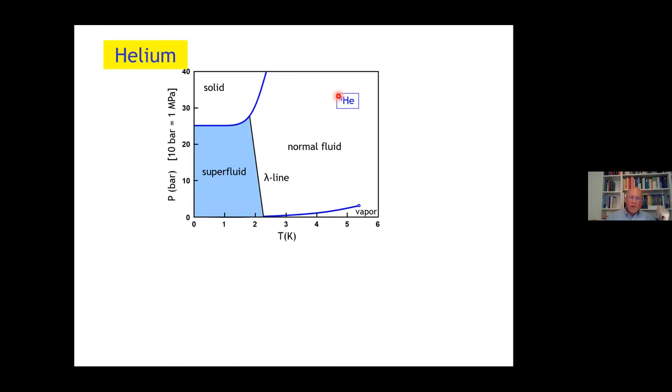This is the phase diagram of helium-4. Pressure in bar, that's not permitted anymore. 10 bar is 1 megapascal. We see the normal fluid, the vapor pressure line, above about 26 bar the solid, and here the famous lambda line and the superfluid. If we superimpose the phase diagram for helium-3, it looks similar. The vapor pressure line is slightly retracted, the solid is at higher pressures, but there is this famous minimum first discussed by Pomeranchuk.